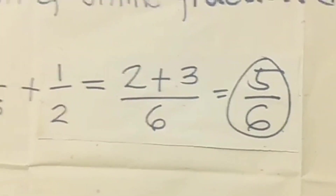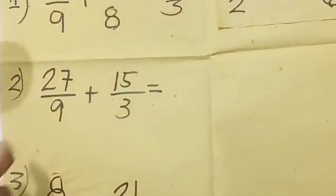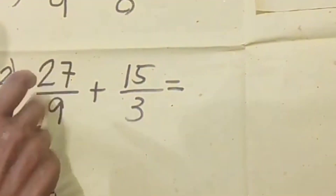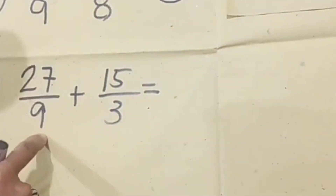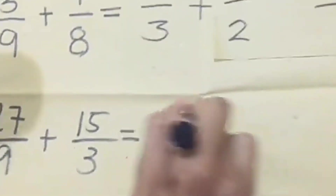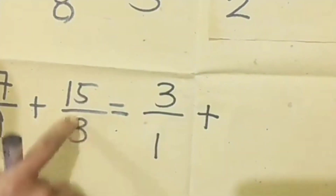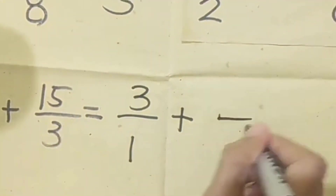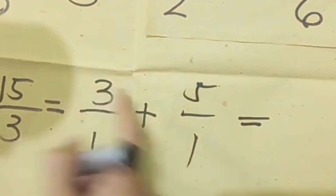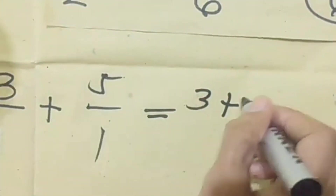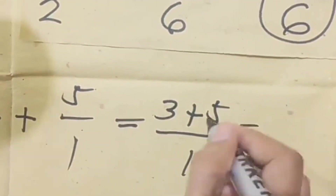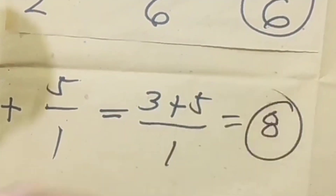Number two: we observe that 9/27 — we can reduce this by dividing by 9. So 9 divided by 9 equals 1, and 27 divided by 9 equals 3, giving us 1/3. Plus 15/3: we can divide by 3, giving us 1/5. Then cross multiply: 1 times 3 equals 3, plus 1 times 5 equals 5, and the denominator is 1 times 1 equals 1. Adding 3 plus 5 equals 8, divided by 1 equals 8. So the final answer is 8.